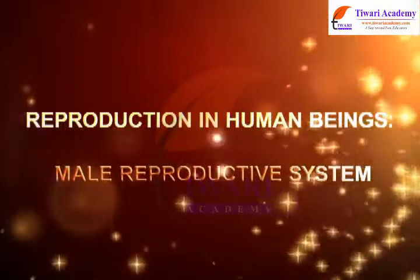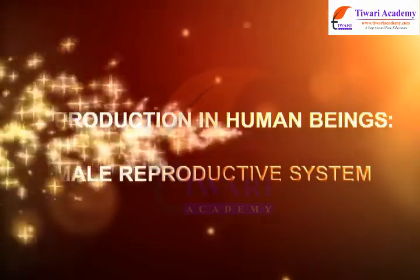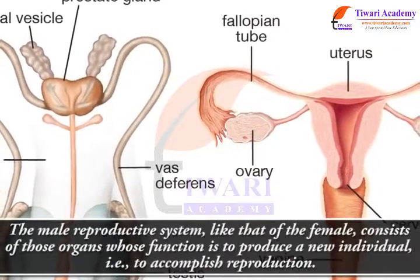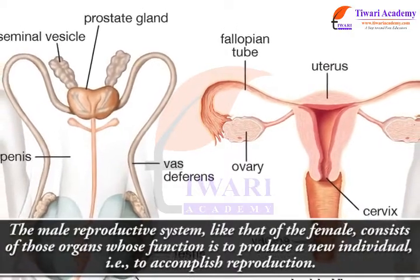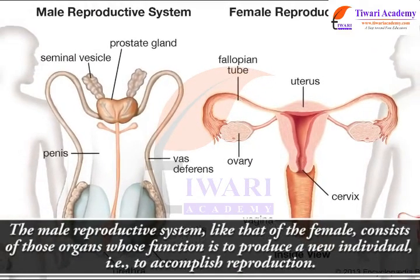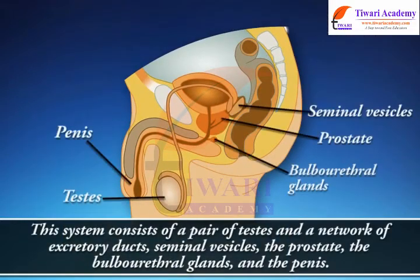Reproduction in human beings: the male reproductive system. Like that of the female, the male reproductive system consists of those organs whose function is to produce a new individual — to accomplish reproduction. This system consists of a pair of testes, a network of excretory ducts, seminal vesicles, the prostate, the bulbourethral glands, and the penis.